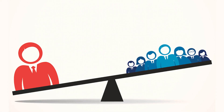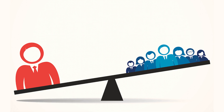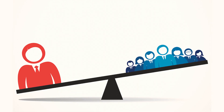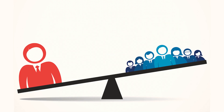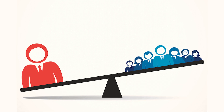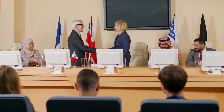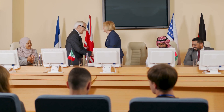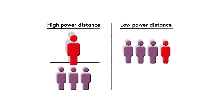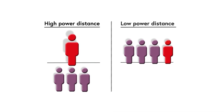The first dimension was power distance. This refers to how members of a society who are less powerful accept and expect that power will be distributed unequally. Power in this context is how people in that society perceive, value, and exercise power. Societies with high power distance tend to accept hierarchical structures more readily — for example, Mexico, Saudi Arabia, Russia, South Korea. Societies with low power distance tend to distribute power more evenly — for example, Sweden, Austria, Canada, Australia.